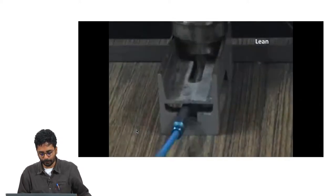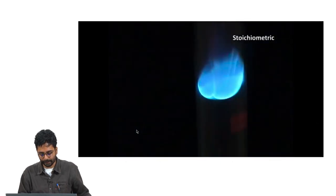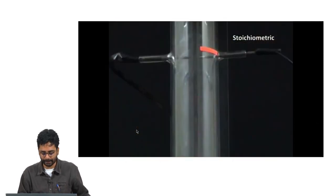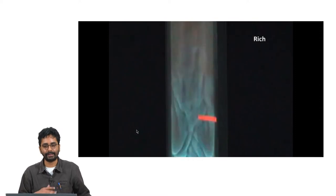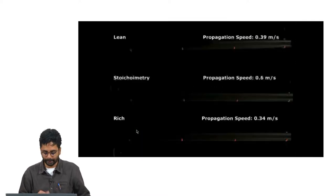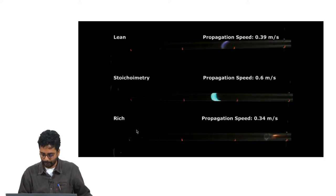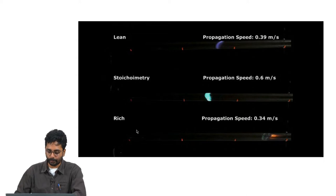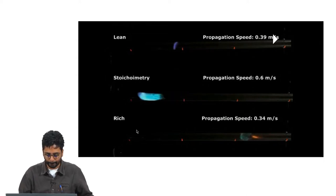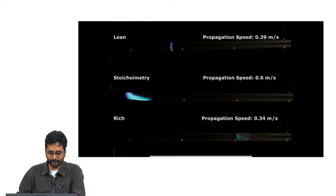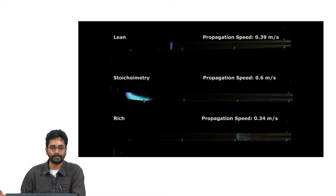This is a nice close-to-flat flame. This is the stoichiometric flame which is nearly flat. Under rich conditions there are several instabilities that make the flame distorted. This is a good frame to look at all three flames. At this moment the lean flame is more or less flat, while the stoichiometric flame has spread out a little bit because of velocity gradients in the tube.